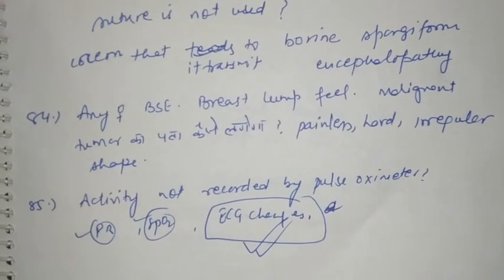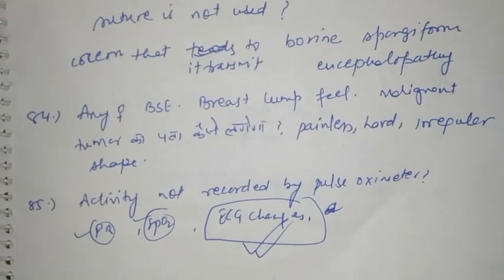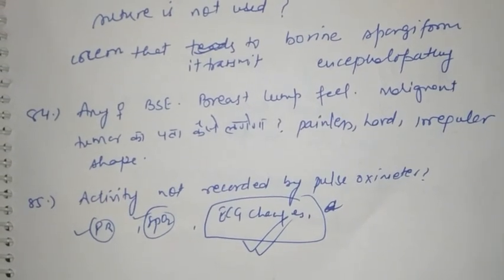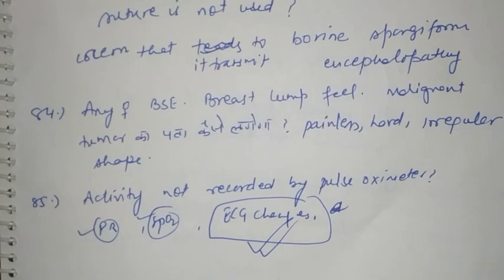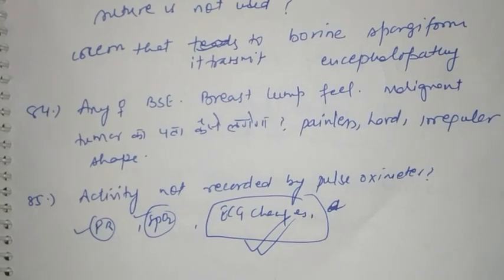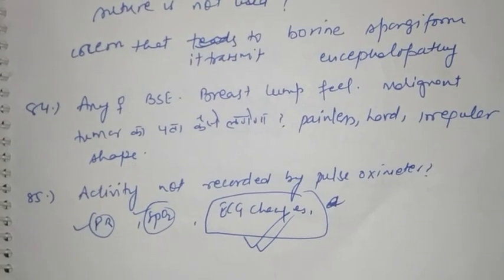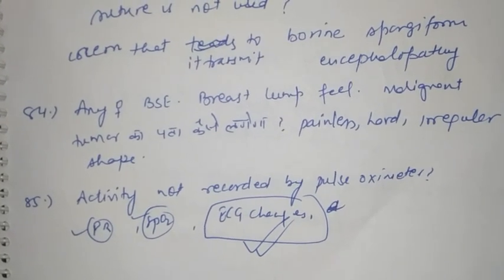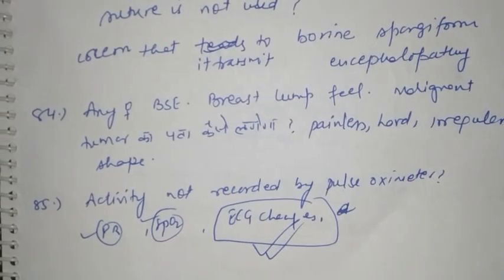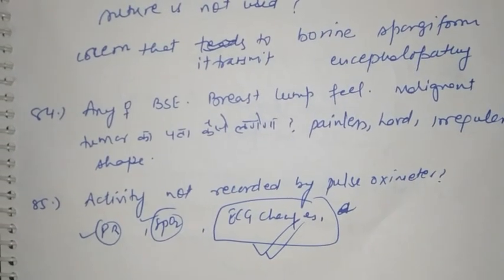Activity not recorded by pulse oximeter — these are the ECG changes that are not recorded by pulse oximeter. Till now I have only this many questions. Aptitude test questions are also uploaded; the link will be given in the description box. As I get more questions, I will be adding to the video as soon as possible. Thank you.